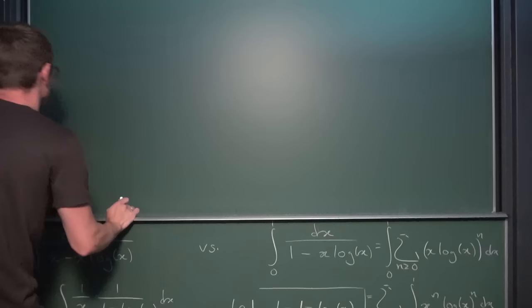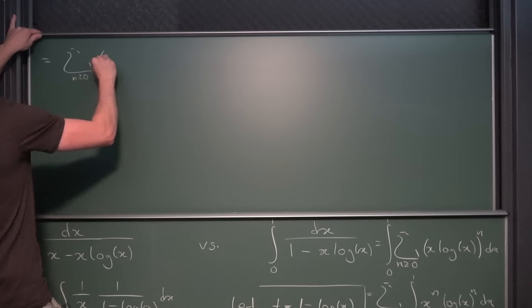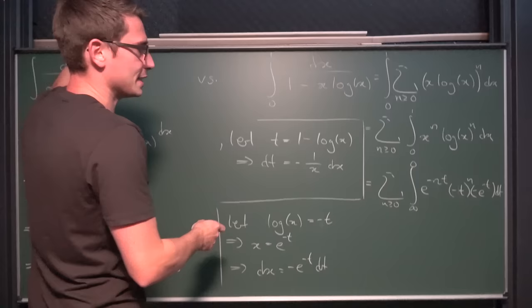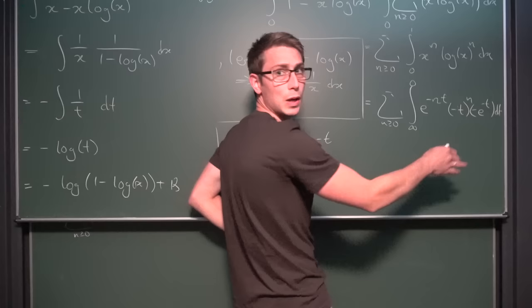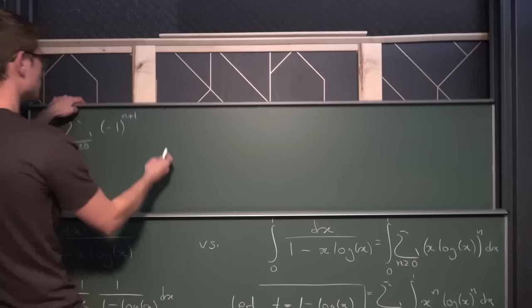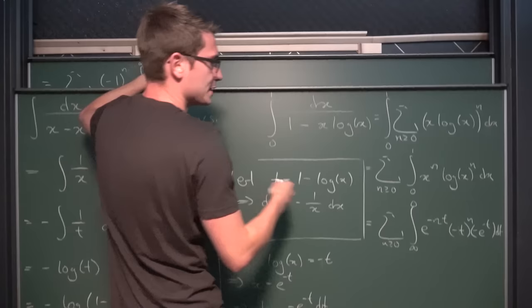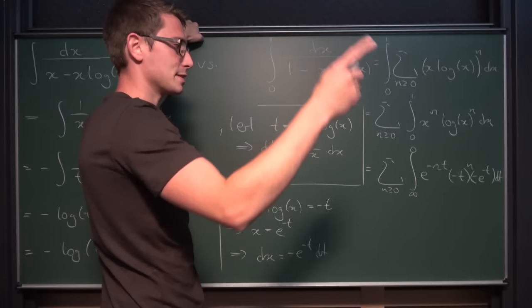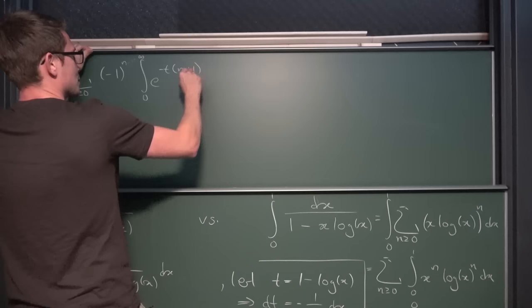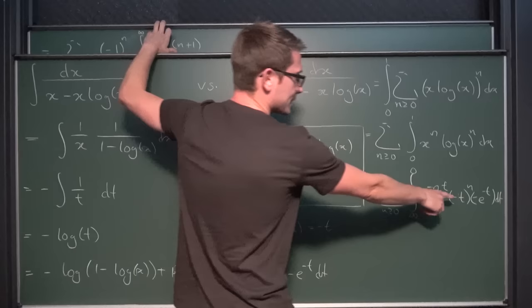Putting this on the new chalkboard, we get the infinite series where n goes from 0 to infinity of negative 1 to the n+1 power. Since we have one extra negative 1, we can use it to interchange the upper and lower bounds of the integral. Getting rid of this plus 1, we change the upper and lower bounds around. What we still have is e to the negative nt times e to the negative t, giving us e to the negative t(n+1), and we are still left with t to the nth power dt.